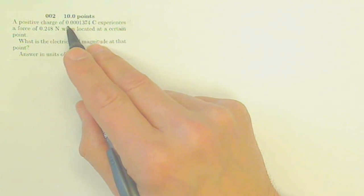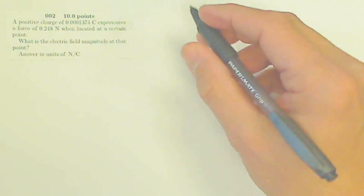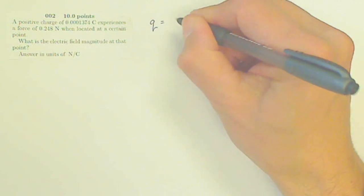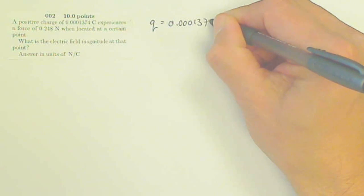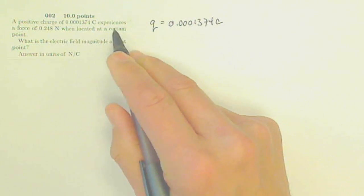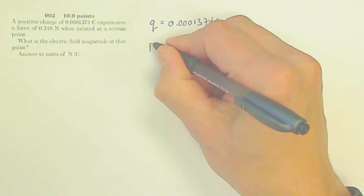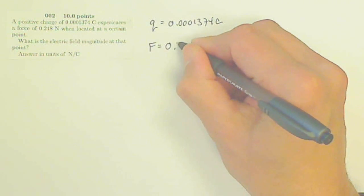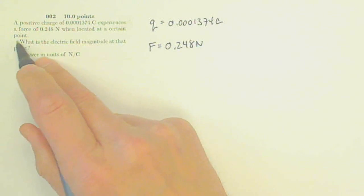A positive charge of 0.0001374 coulombs, so that is my Q equals 0.0001374 coulombs, experiences a force of 0.248 newtons. So my force is 0.248 newtons when located at a certain point.